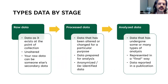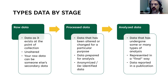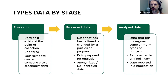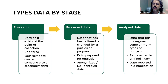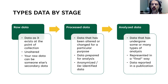We can also think about data by stage. Raw data exists at the point of collection — it's unaltered, in its rawest form, and can also be someone else's secondary data. Process data is any data that has been transformed or altered, such as data you're subsetting for analysis or from which you've removed identifiers to protect patient privacy. Analyzed data encompasses all the actual calculations or analysis done on that processed data. Think about what would be considered raw versus processed versus analyzed in your own research context.